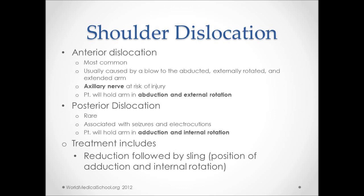Patients will typically present with their arm held in abduction and external rotation. This is important to distinguish from a posterior dislocation, where the patient's arm will be held in abduction with internal rotation. Posterior dislocations tend to be much more rare and can be associated with seizures or electrocutions. Treatment includes reduction followed by a sling, which puts the upper extremity in a position of adduction and internal rotation.